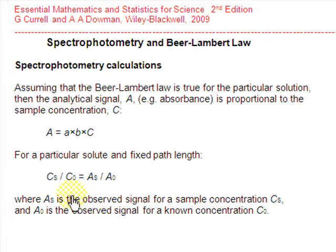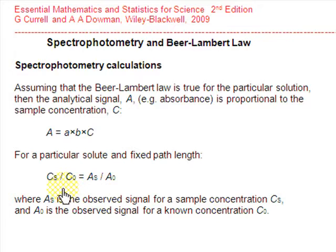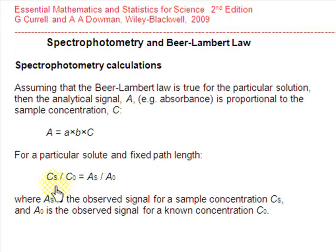This means that if we put two different solutions of the same solute into the same spectrophotometer, then the ratios of their absorbances will be proportional to the ratios of their concentrations, given by this simple proportionality equation. In practice, most spectrophotometry calculations are based on finding the values of the particular variables in this equation and then solving for an unknown value.